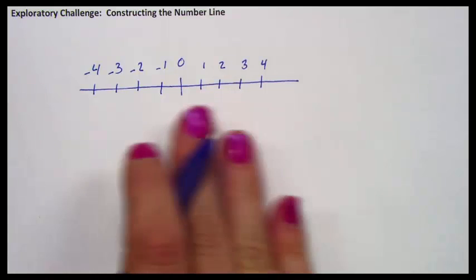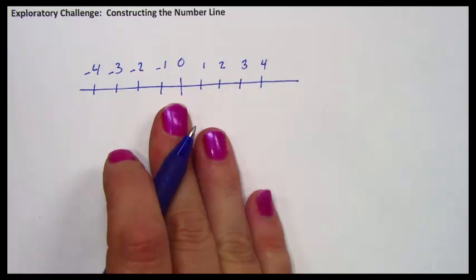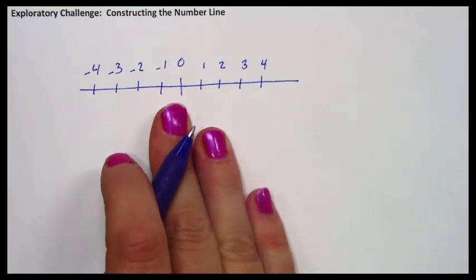You might say that it's important that a number line has zero in it, but it's not. Zero is just a number. It doesn't have to be in the middle. It doesn't even have to be on your number line.